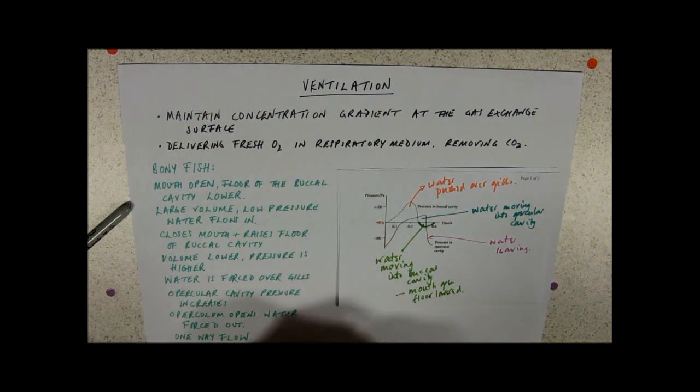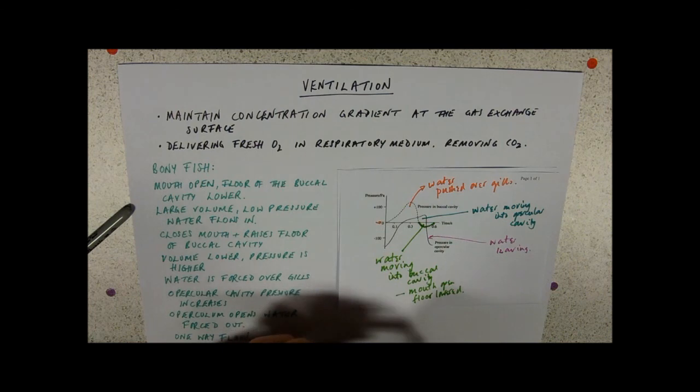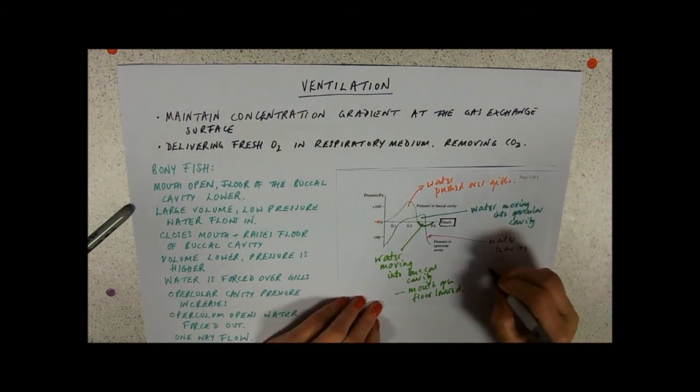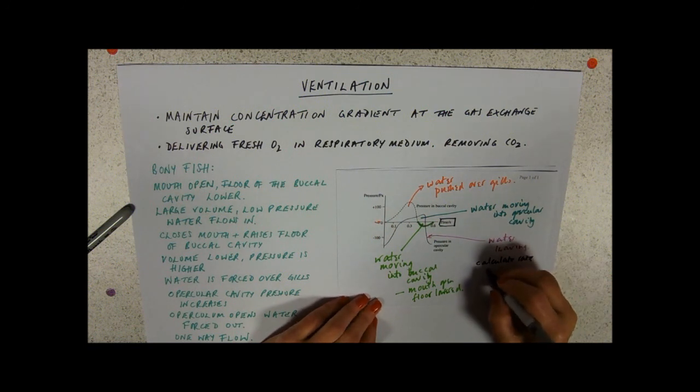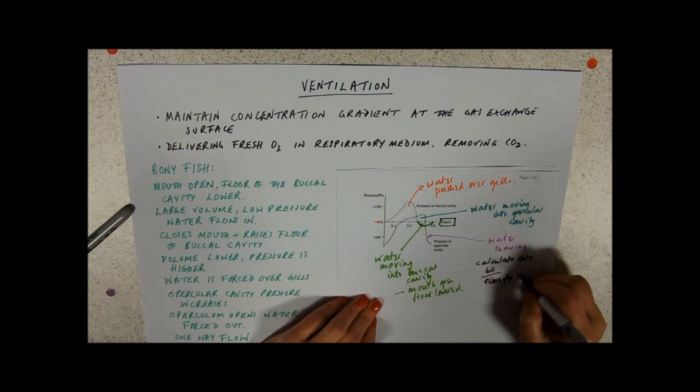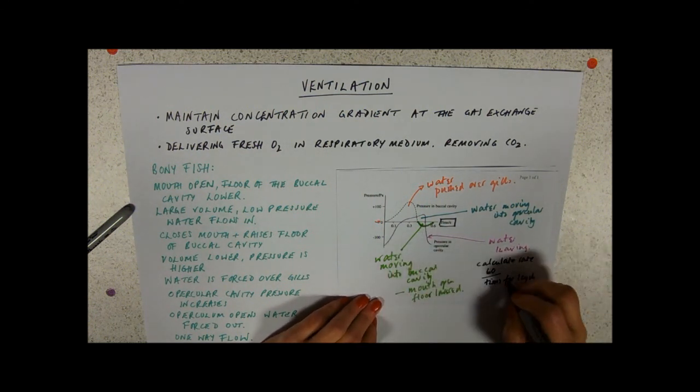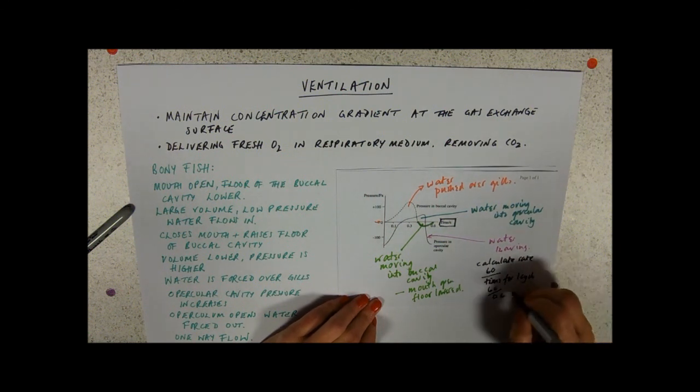So what else might you be asked to do with this graph? You might be asked to calculate the ventilation rate because you've got time here. So you could calculate a rate from that by doing 60 seconds - one minute - over time for one cycle. So again, you're looking for a repeating pattern. So 60 over 0.6 to give whatever that gives.